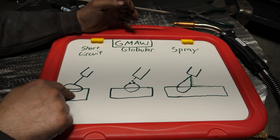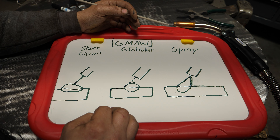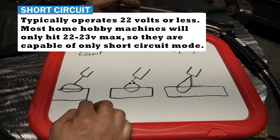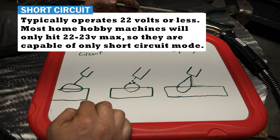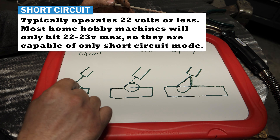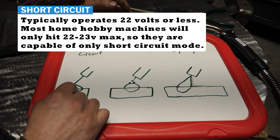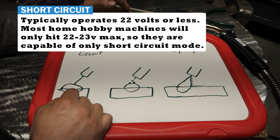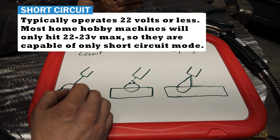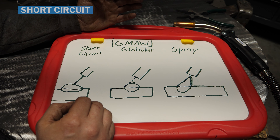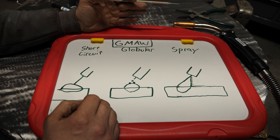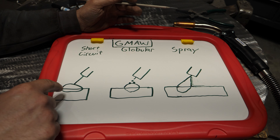Short circuit is done on lower amp machines — your 200 amp and under machines. It's done with 100% CO2 shielding gas or C25, which is 75% argon / 25% CO2. This process is the limit of what most home hobby wire welders are capable of doing. When you go to globular or spray, you can have issues achieving the values and set points required for them on a home hobby machine, and I'll explain why in a second.